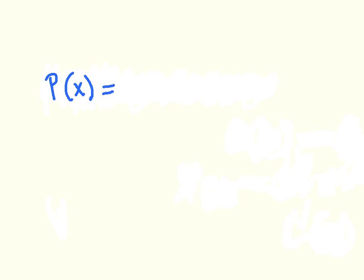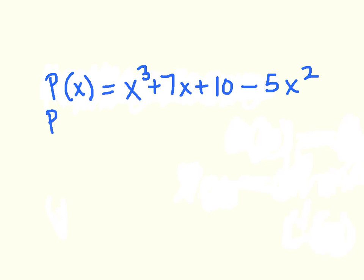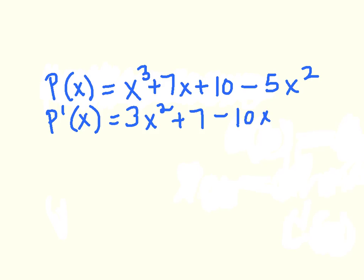Let's begin by finding our profit function. P of x is equal to the revenue function minus our cost function. That gives us x cubed plus 7x plus 10 minus 5x squared. The next thing we want to do is find the derivative of our profit function, which will help us find our marginal profit. So here we have 3x squared plus 7 minus 10x. Let's also look at the derivative of each of our cost and revenue functions.